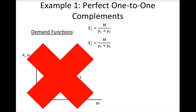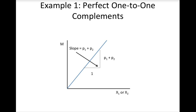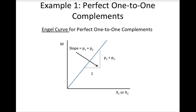We can also graph the relationship between quantity demanded and income. The convention in economics is to reverse the axes so that income is on the vertical axis and quantity is on the horizontal axis. The graph is still a straight line, but the slope equals P1 plus P2 instead of 1 over P1 plus P2. When depicted this way, the graph is called an Engel curve. Because this Engel curve is upward sloping, we know that goods 1 and 2 are normal goods.